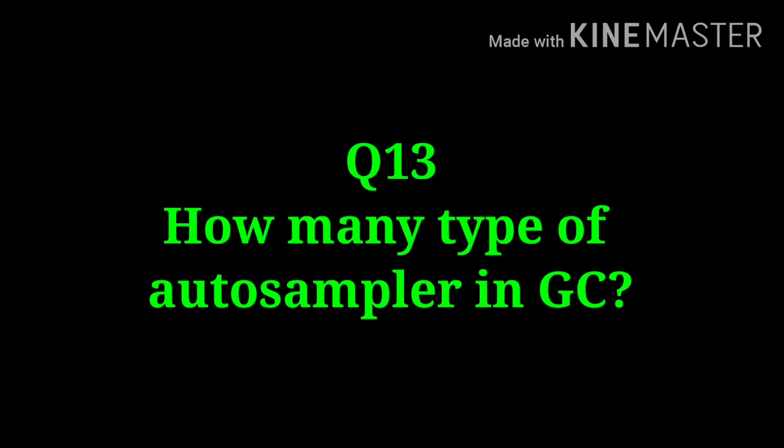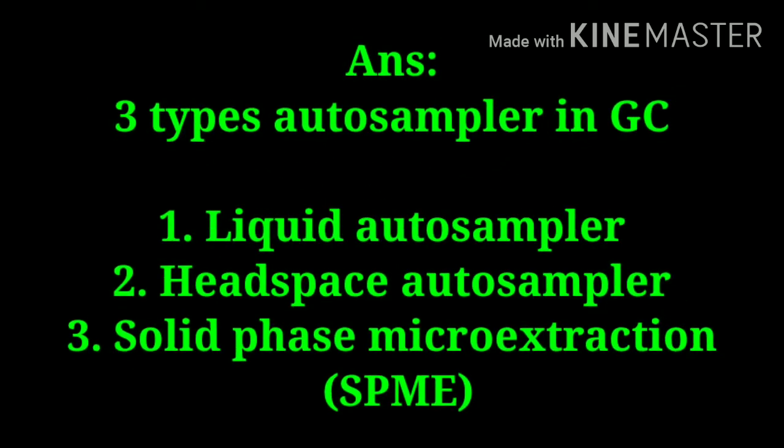How many types of autosamplers are used in gas chromatography? There are three types: liquid autosampler, headspace autosampler, and solid-phase microextraction.